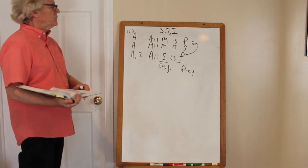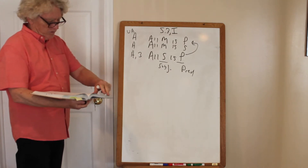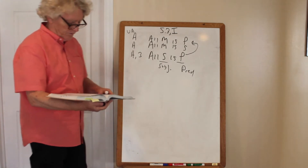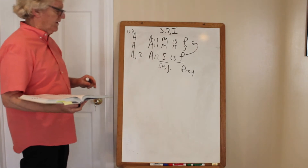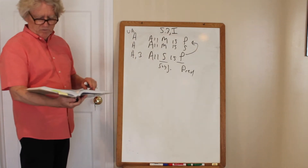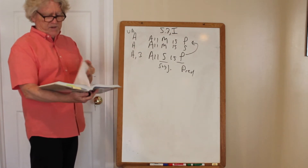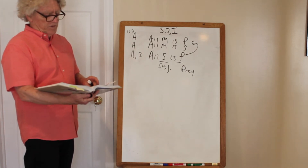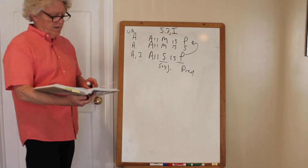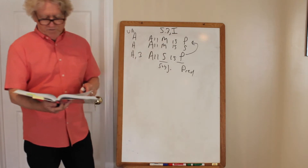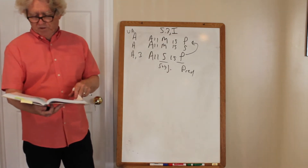Now we want to see whether this violates any of the rules. You can go back to check these rules — they begin on page 296 and continue through 299. Rule one says the middle term must be distributed at least once. Rule two says if a term is distributed in the conclusion, it must be distributed in a premise. Rule three says two negative premises are not allowed. Rule four says a negative premise requires a negative conclusion.